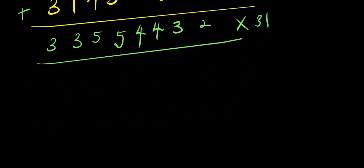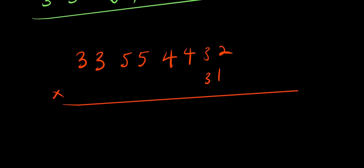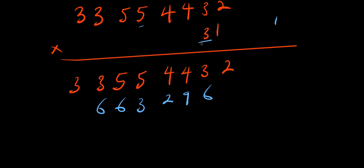So we have the intermediate result 33,554,432. Multiplying by 31: using 1 as multiplier gives 33,554,432, and using 3 as the tens multiplier, we work through each digit, carrying as needed, to get the final product 1,040,187,392.